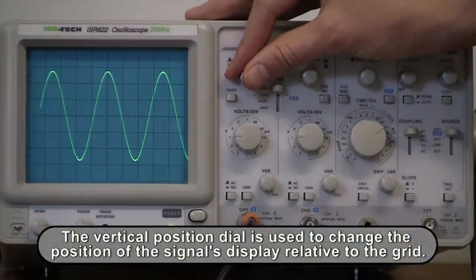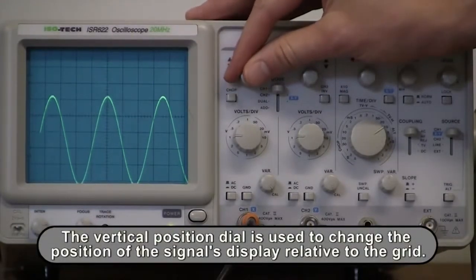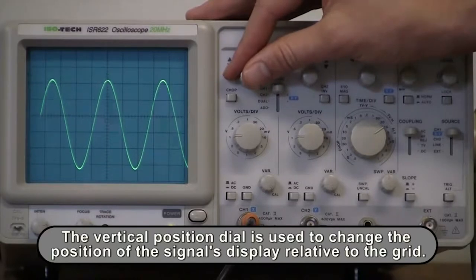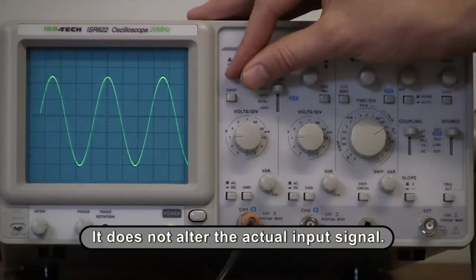The vertical position dial is used to change the position of the signal's display relative to the grid. It does not alter the actual input signal.